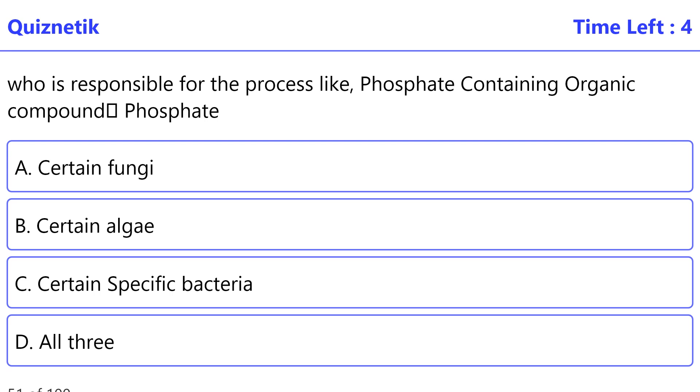Who is responsible for the process-like phosphate containing organic compound phosphate? The correct option is C, certain specific bacteria.